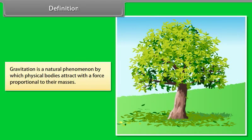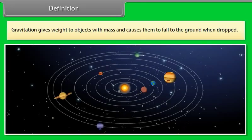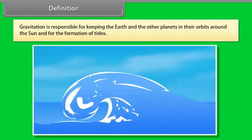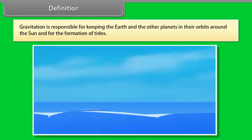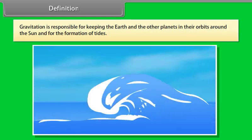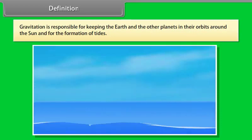Definition. Gravitation is a natural phenomenon by which physical bodies attract with a force proportional to their masses. Gravitation is most familiar as the agent that gives weight to objects with mass and causes them to fall to the ground when dropped. Gravitation is responsible for keeping the earth and the other planets in their orbit around the sun and for the formation of tides.